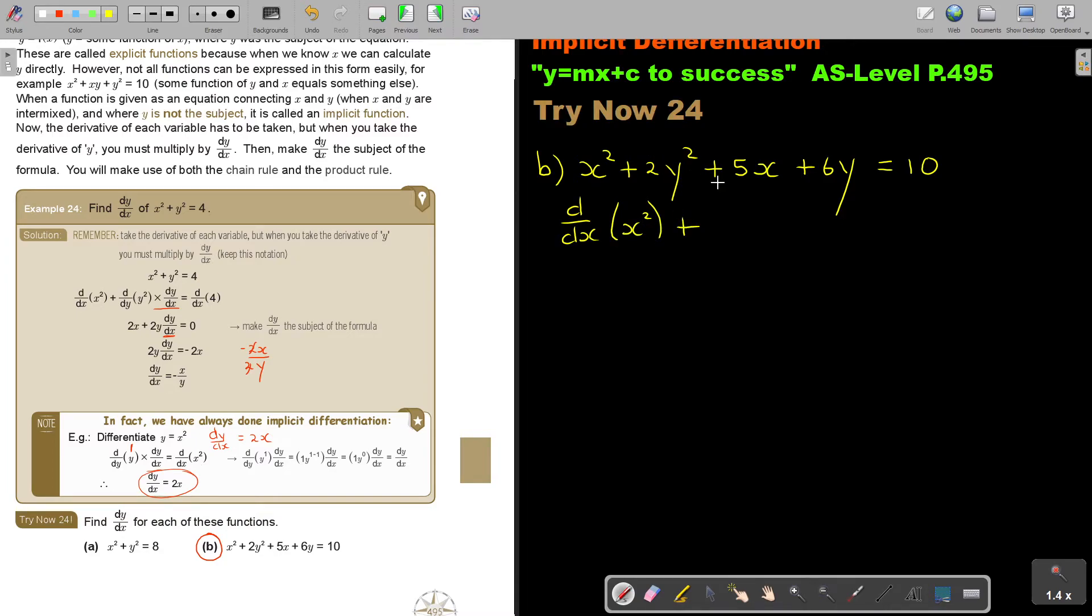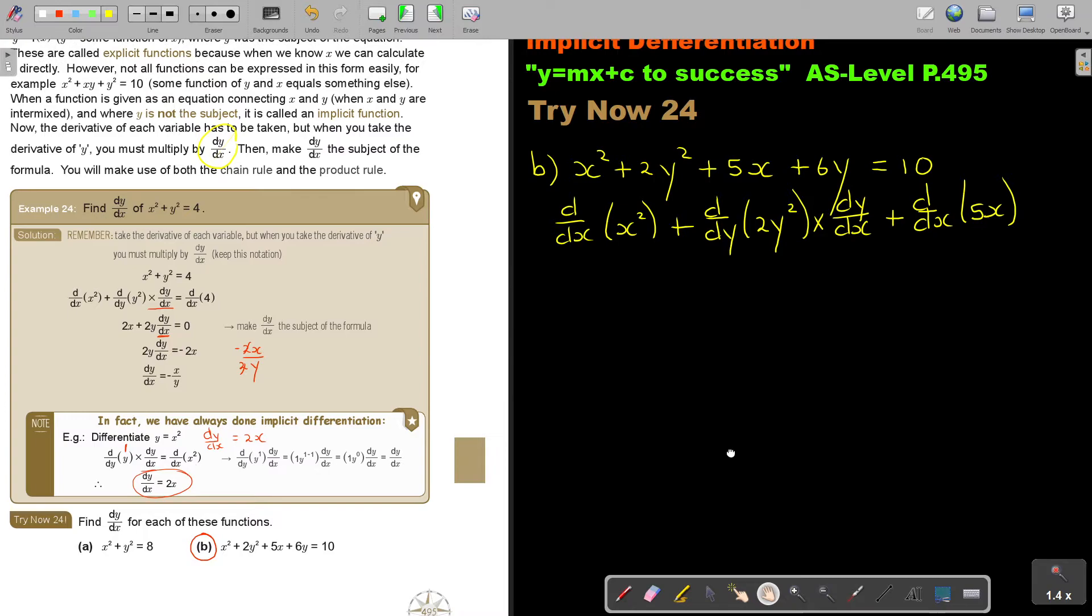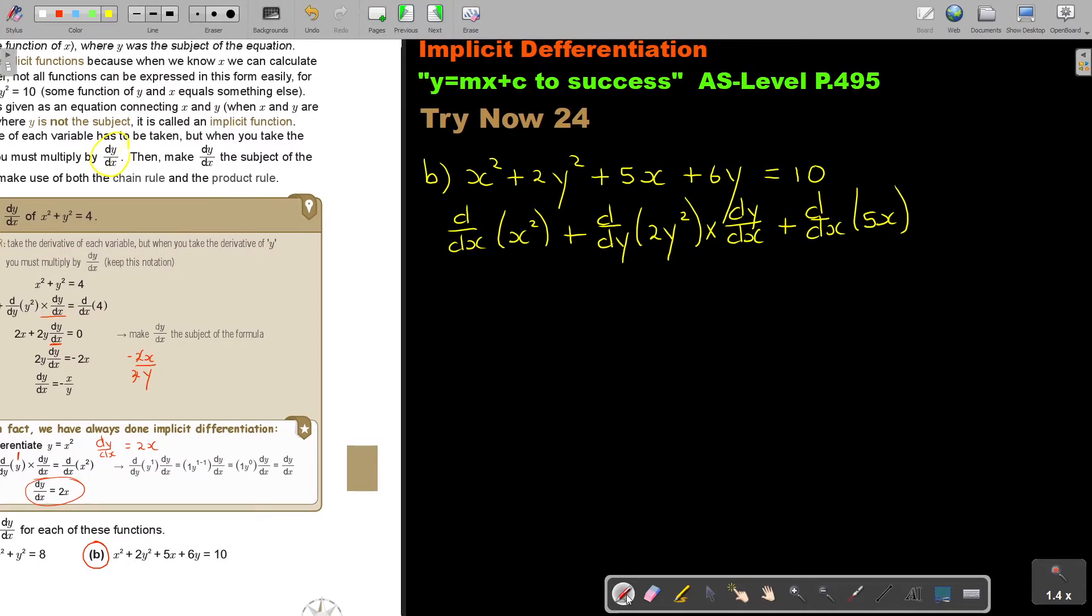If it's in terms of y, then I say d over dy. And there's my term. And don't forget, if it's in terms of that, I must multiply with dy over dx. Can you remember dy over dx? Then, again, this is in terms of x. So it's d over dx. There is the 5x.